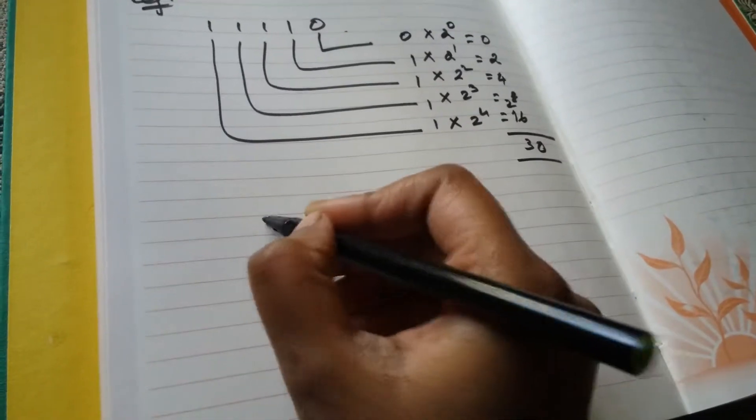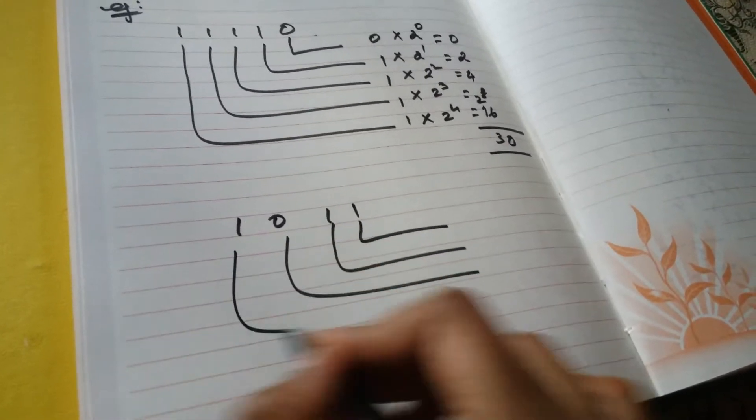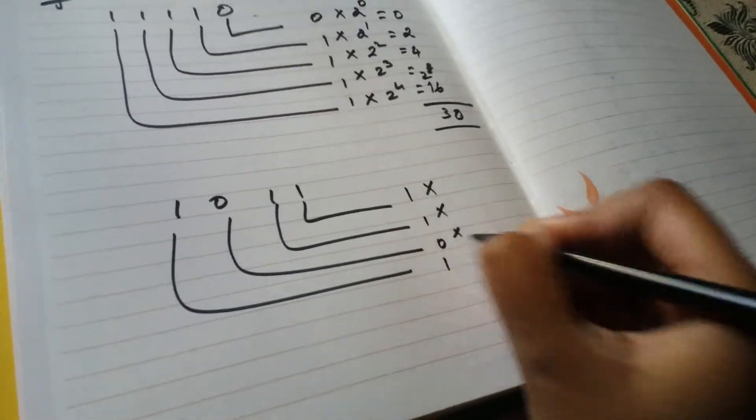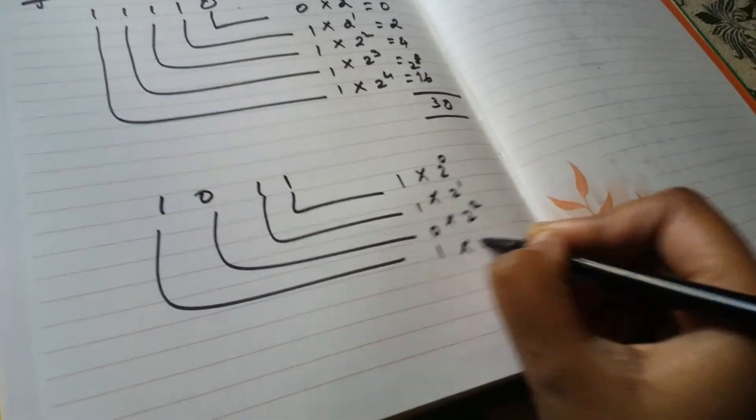So maybe we'll try out another example: one, zero, one, one. Likewise, the same method. List down all the numbers and then multiply it with the powers of two: two power zero, two power one, two power two, and two power three.